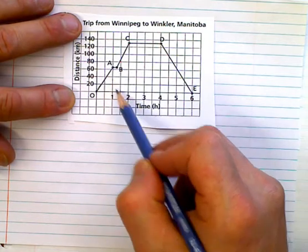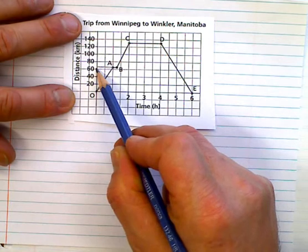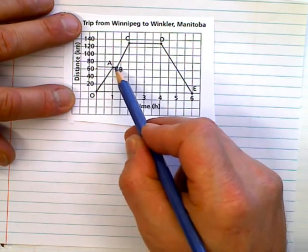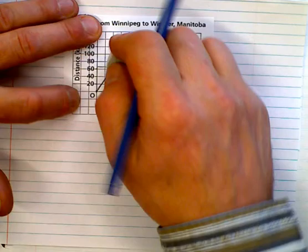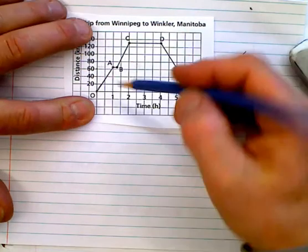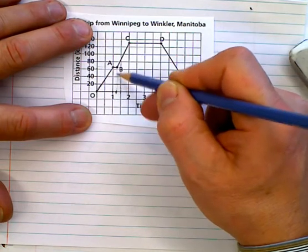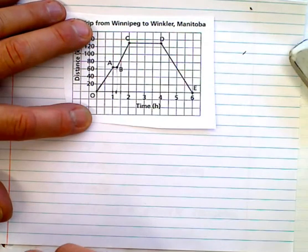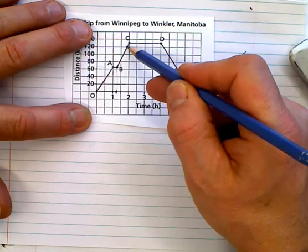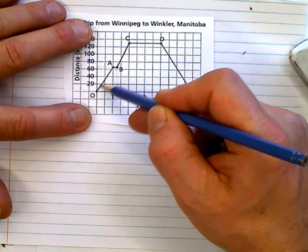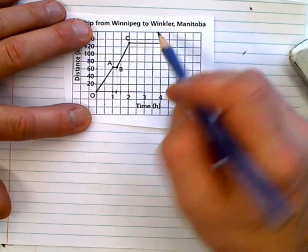They stayed there for about how long? How long did they stay there for? Well, if that's half an hour, 15 minutes they stayed there. So, from A to B is 15 minutes. And they went and took off again. Looks like they went a little bit faster than they did here. A little bit faster. But whatever, no big deal. And they stopped again.